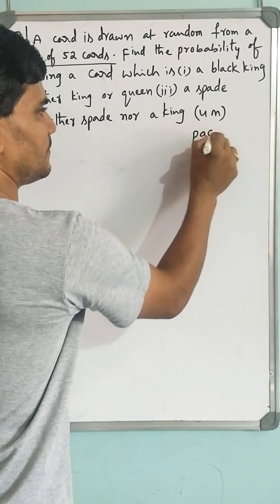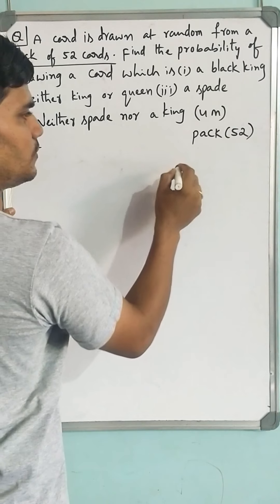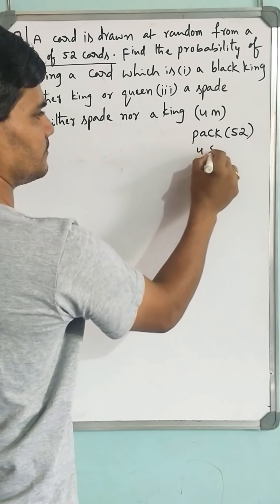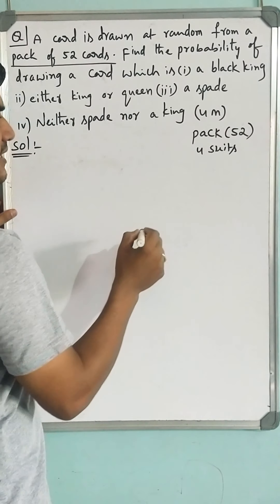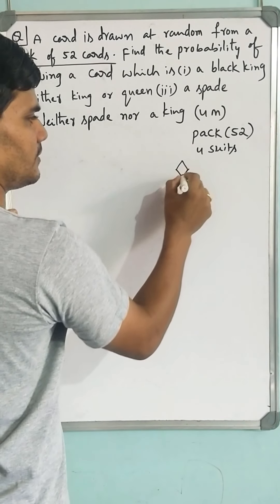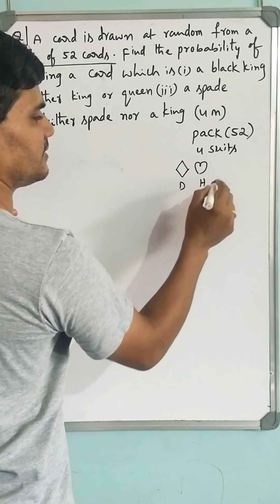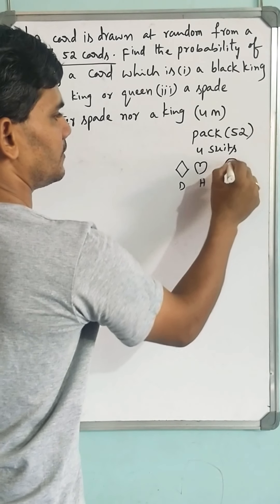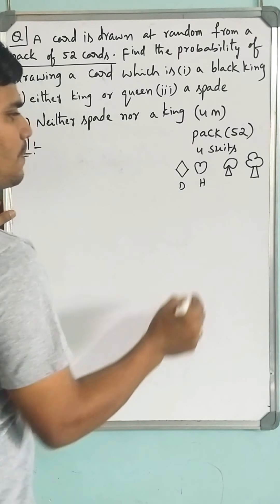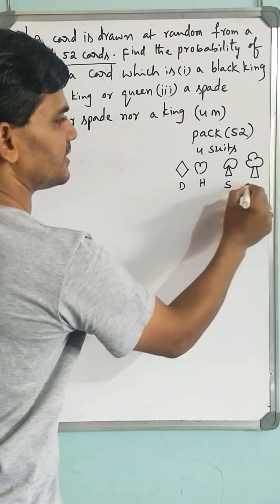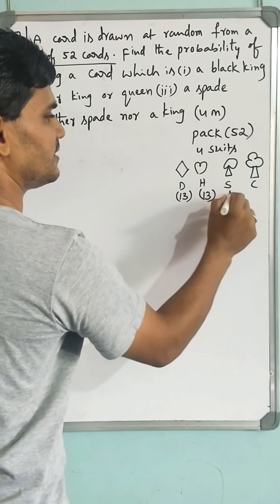A pack contains 52 cards. In those 52, there will be 4 suits, and each suit will be of 13 cards. Two are red suits — that is diamonds and hearts — and two of them are black suits — these are called spades and clubs. Each suit contains 13 cards.